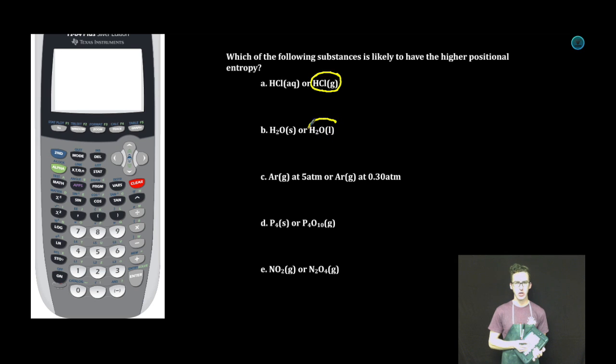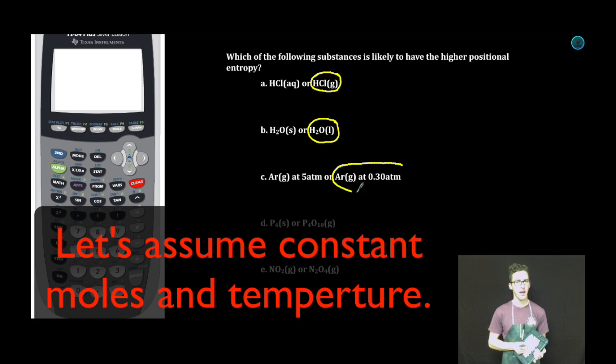Your liquids less organized, more disorganized than your solids. Argon at five atmospheres or argon at 0.3 atmospheres. Both of them are gases. Again, the one at lower pressure implies that it occupies a greater volume.